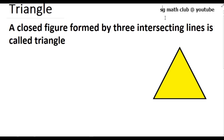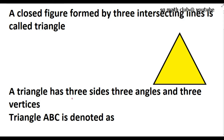You have studied about triangles and their various properties in your earlier classes. A closed figure formed by three intersecting lines is called a triangle, and 'tri' means three. A triangle has three sides, three angles, and three vertices. Suppose this is triangle ABC. I can denote this triangle ABC like this — this is the symbol for triangle ABC. We usually use capital letters to denote a triangle.